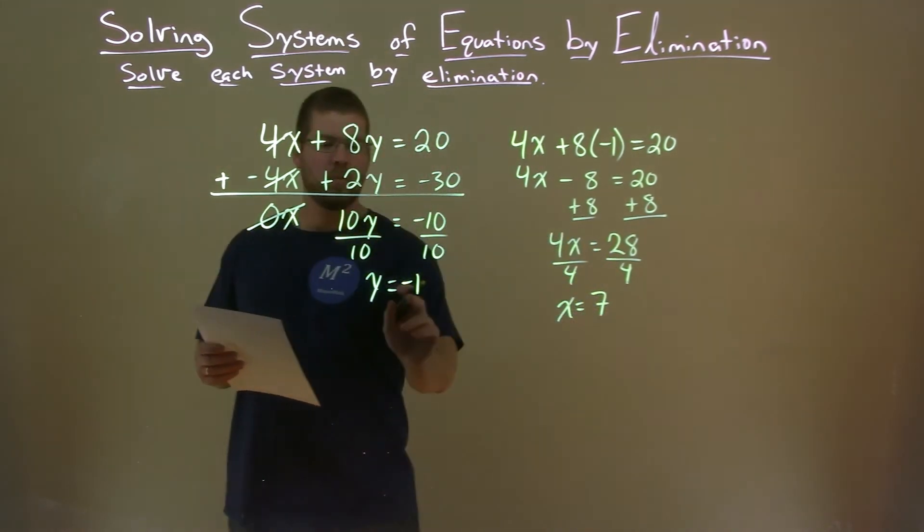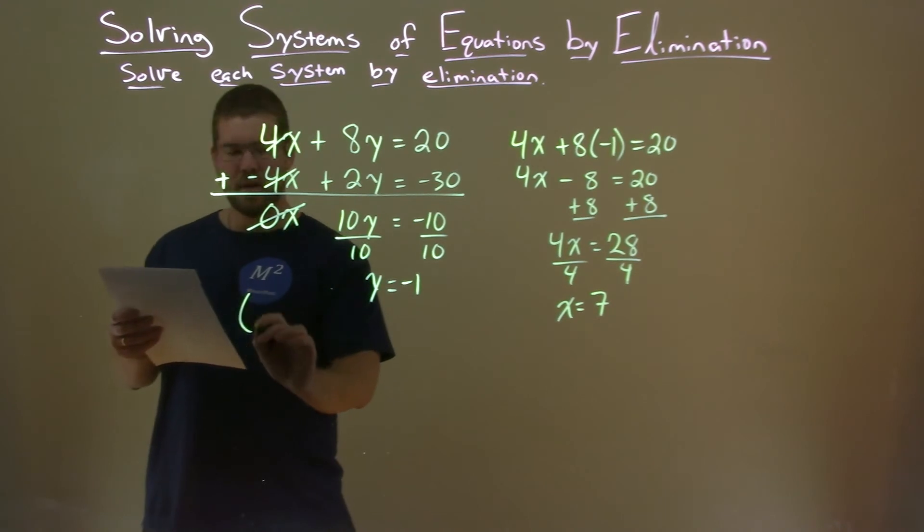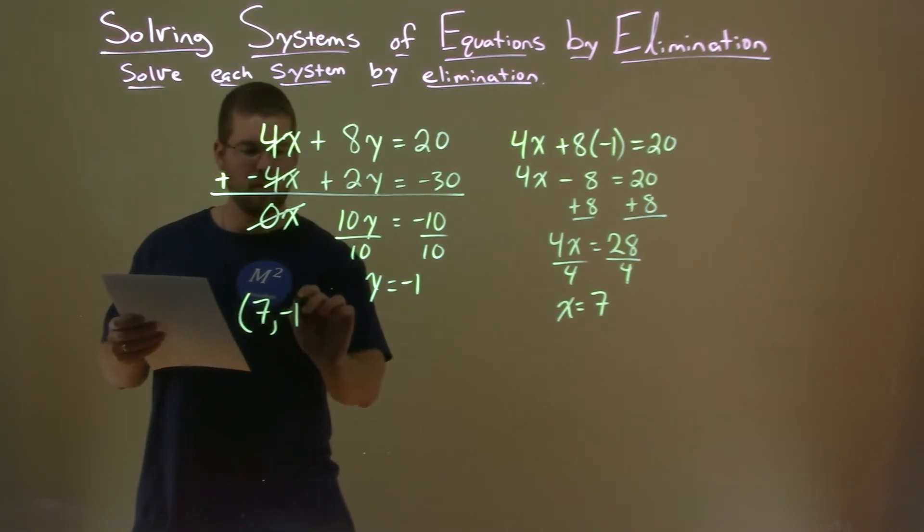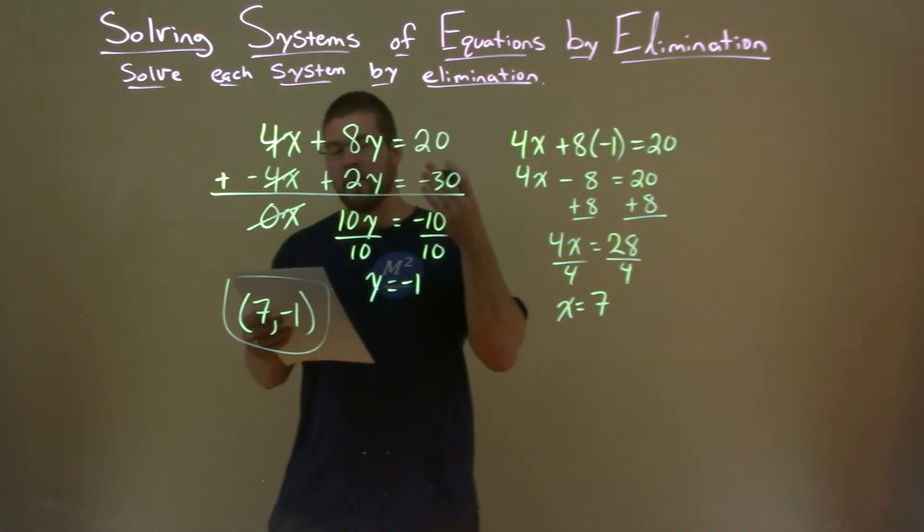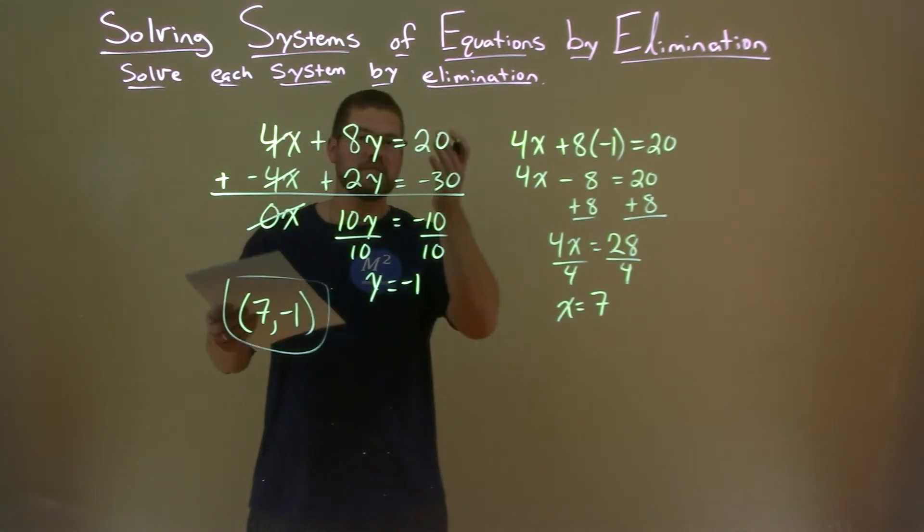So now we have our x and y value. We can write this as a coordinate point, 7 comma negative 1. And here is the solution for solving these two equations by